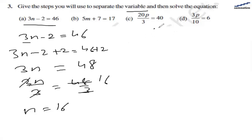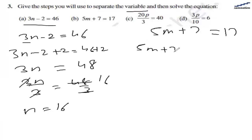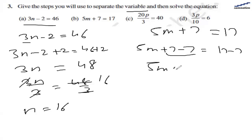For part (b) we have 5m plus 7 equal to 17. So we need to first subtract 7 from both sides. So we have 5m plus 7 minus 7 equal to 17 minus 7. Plus 7 and minus 7 give us 0, so we are left with 5m only, and the right hand side gives 17 minus 7 which is 10.